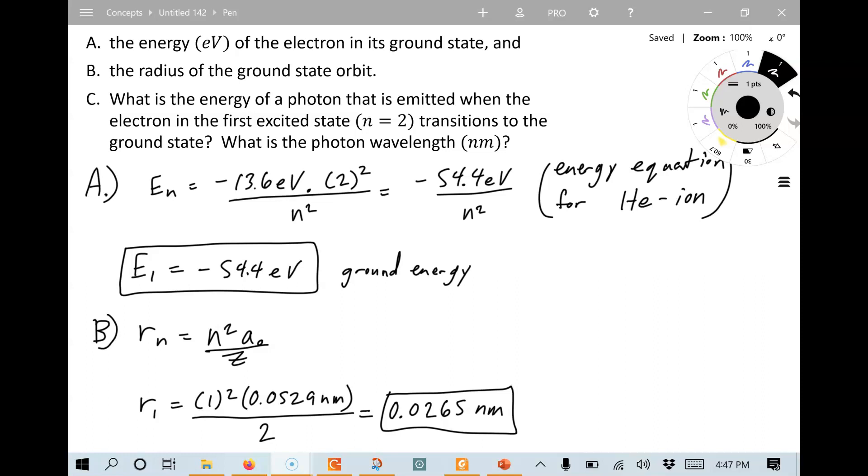Notice that the radius of the electron, according to the Bohr model, for helium, it's half as big as it is for hydrogen. That's because helium's got two protons, and it has a greater electrical attraction, pulls the electron closer. All right, let's look at C.